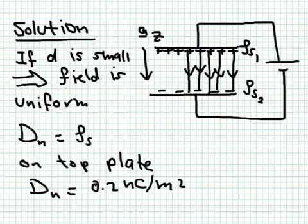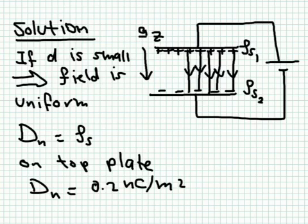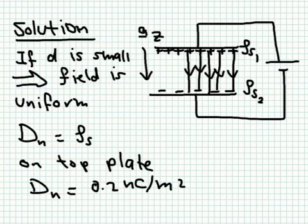Applying the boundary condition: if ρs = 0.2 nC/m² on the surface, and there is no field inside the conductor itself, then the normal component of D must equal ρs. Since we assume the field is uniform, D everywhere equals 0.2 nC/m². Note that this uniformity assumption does not hold for cylindrical or spherical structures, where D depends on distance from the charge.